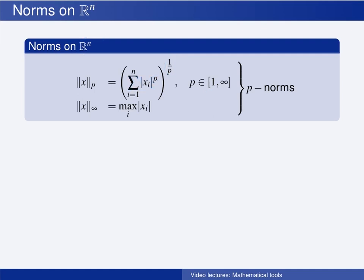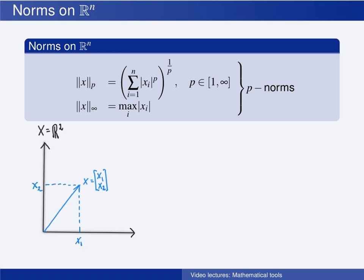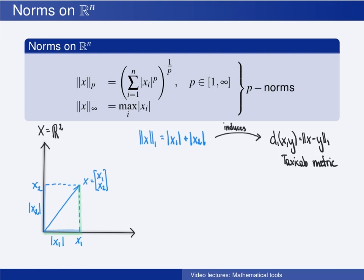To illustrate this, we can use the set of two-dimensional vectors with real valued components. The vector x has two components, x1 and x2. The absolute value of x1 is the length of this line segment here, and the absolute value of x2 is the length of this line segment here. The 1-norm of x is the absolute value of x1 plus the absolute value of x2 — the sum of the lengths of these two line segments. This norm, the 1-norm, induces the taxicab metric, which is the 1-metric we defined when discussing metrics.